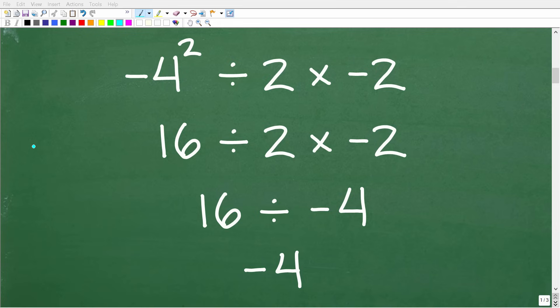If you can't determine the errors in this work, you probably need to review some basic math. Let's take a look at the problem. So we have negative 4 squared divided by 2 times negative 2, and the answer here is negative 4. So is this answer right?